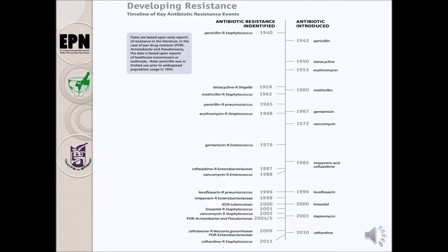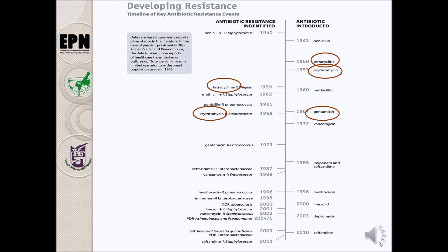This is a chart showing when an antibiotic was discovered and when the first cases of resistance occurred. Tetracycline was first introduced into the market in 1950, and by 1959, resistance to tetracycline had already been reported. Erythromycin was introduced in 1953, and by 1968, strains resistant to erythromycin had been reported. For gentamicin, first introduced in 1963, resistance strains had already been reported by 1979.